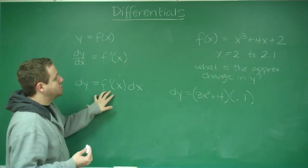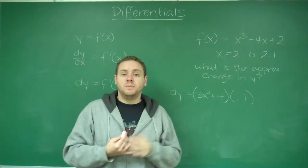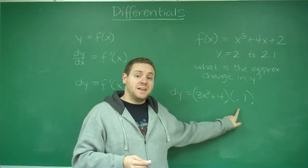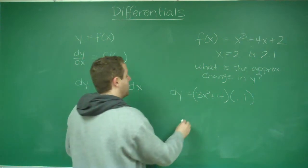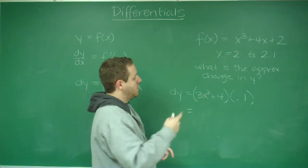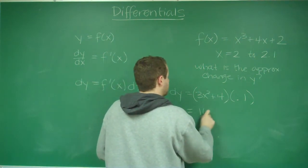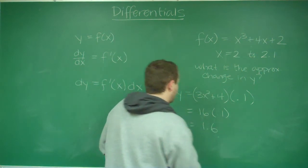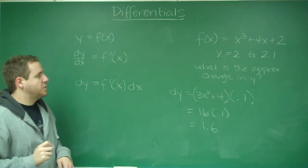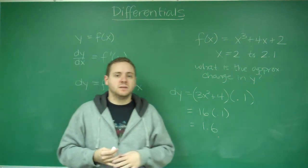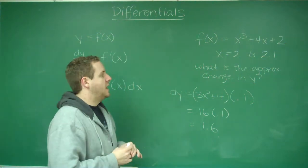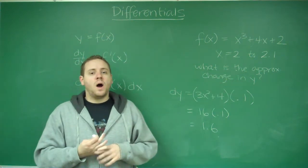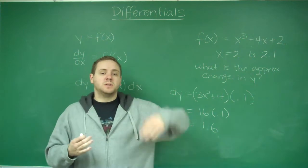When you do f prime, this should always be what your x began at. Remember, if it was going from 2 to 1.9, for example, this would be a negative 0.1. So we plug in 2 for x: 2 squared is 4, 4 times 3 is 12, and 12 plus 4 is 16. So we get 16 times 0.1, which equals 1.6. That means if x changed from 2 to 2.1, y is going to change by approximately 1.6.